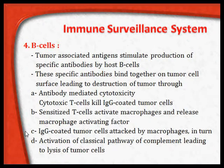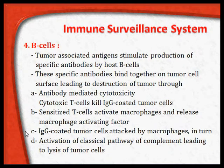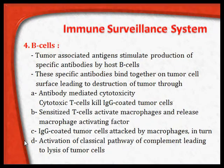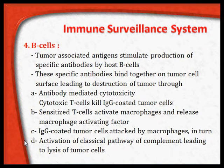The IgG-coated tumor cells are attacked by macrophages sensitized by T cells. This leads to activation of the classical pathway of the complement, leading to lysis of the tumor cells. These are the various mechanisms normally in place to check the proliferation or unwanted growth of any cell and ensure that no tumors are formed in our body — that is how the immune surveillance system works.